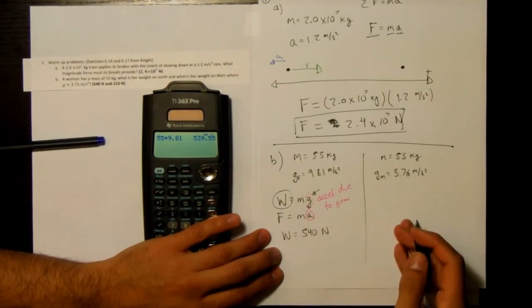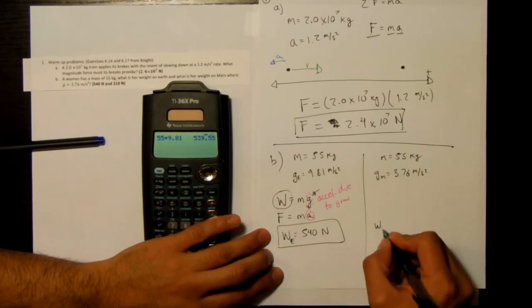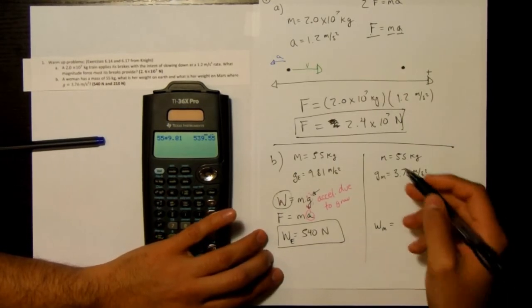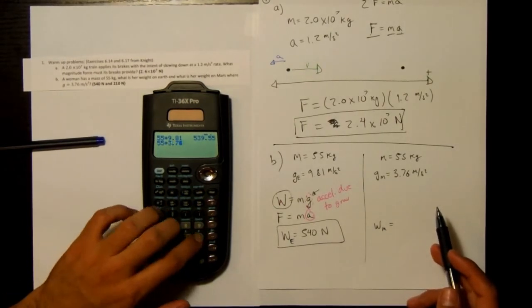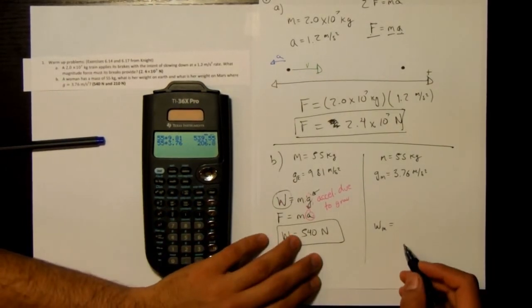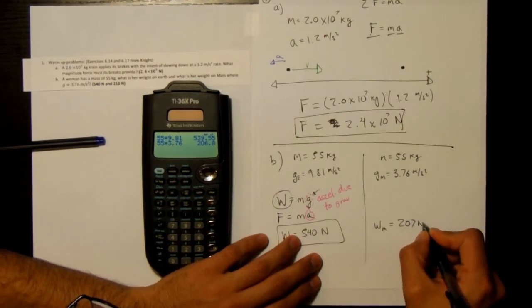Same thing over here on Mars. Weight for Mars, we'll just multiply 55 by our acceleration on Mars, 3.76, and we have 207 newtons.